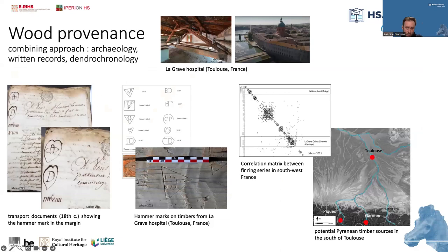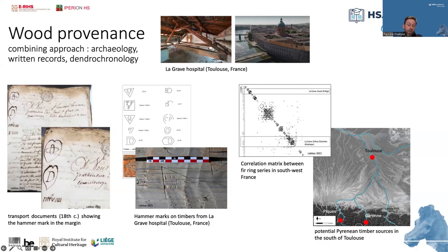In another example, research concerned a dendroarchaeological study of a former hospital in Toulouse in southwestern France, combining archaeological sources, written records, and dendrochronology. Dendrochronological dating provided dates ranging from the 17th to the 19th century. On many timbers, hammer marks made by timber merchants before the timber was floated were found. Many transport documents have been preserved, and the merchant's marks are reproduced in their margins, enabling matches to be made and in some cases providing a provenance indication. This result was then compared with a classic dendro provenance approach.